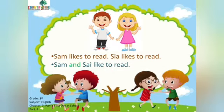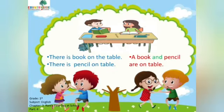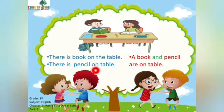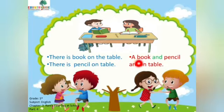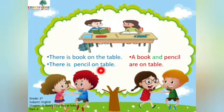Moving ahead — there is a book on the table, and there is a pencil on the table. So how can we join these two? We can say: there is a book and a pencil on the table.